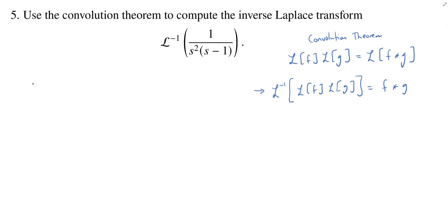So in our case, we have the inverse Laplace transform of one over s squared times s minus 1. And we can view this as the inverse Laplace transform of the product of one over s squared with one over s minus 1.